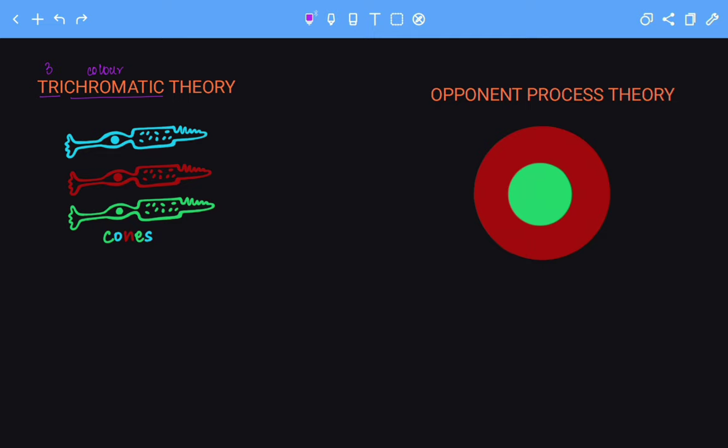The cones are classified based on the wavelength that they are sensitive to. The blue cone is sensitive to low wavelength, red cone is sensitive to high wavelength, and the green cone is sensitive to a medial range of wavelength.